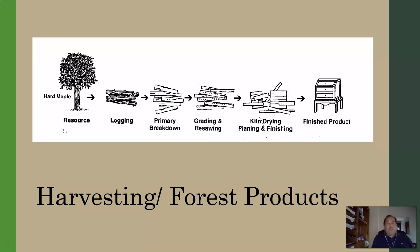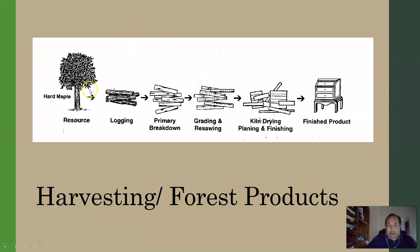The important part of harvesting is that it's how we get to our forest products. In this example, we start with a maple tree, which is turned into logs. Those logs at the mill are turned into dimensional lumber that's graded, re-sawed, kiln-dried, and then planed and finished — meaning the edges are cleaned up. You end up with a finished product; in this case it looks like a chest of drawers. The harvesting part of forestry is understanding how we can take this tree, see that finished product, and understand the whole process in between and how much that tree should be worth.